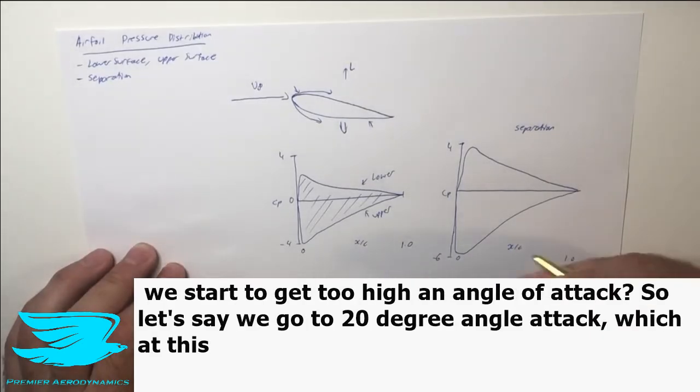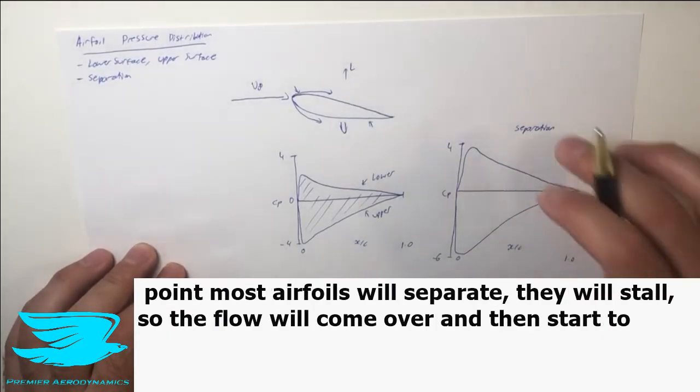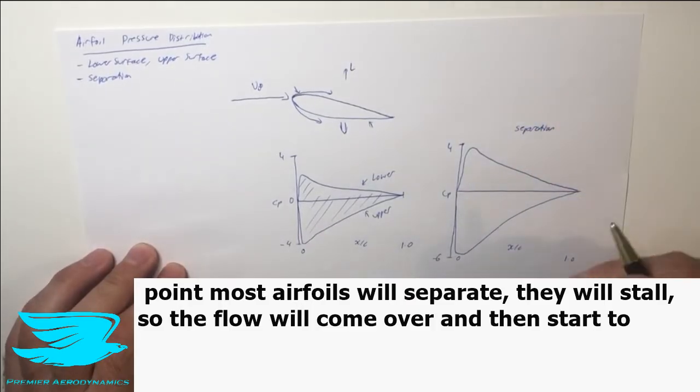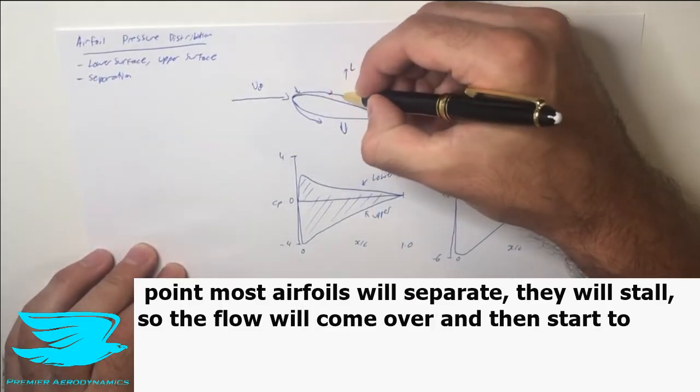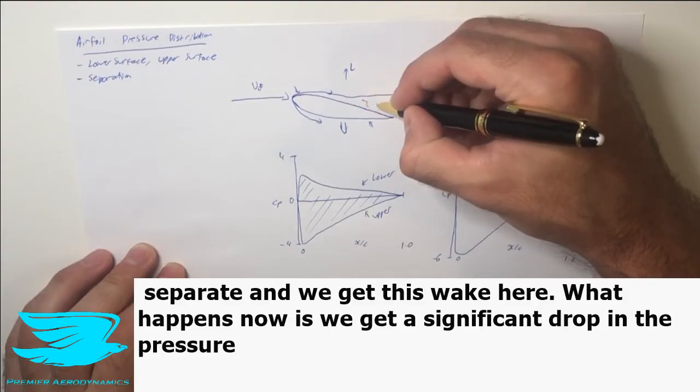Now what happens when we start to get too high an angle of attack? Let's say we go to 20 degree angle of attack, which at this point most airfoils will separate, they'll stall. So the flow will come over and then start to separate, we get this wake here.